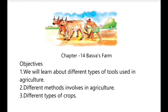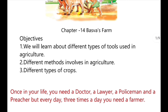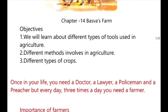Today we will study Basfa's Farm, chapter 14 from class 4 EBS Looking Around. In this chapter, the objectives are: we will learn about different types of tools used in agriculture, different matters involved in agriculture, and different types of crops that are grown at different times.